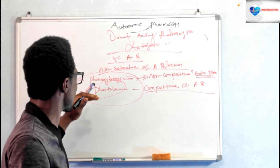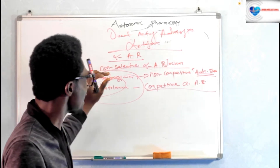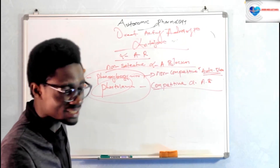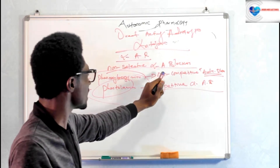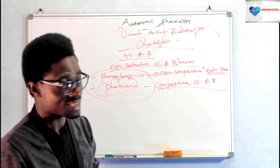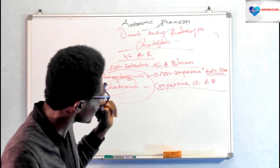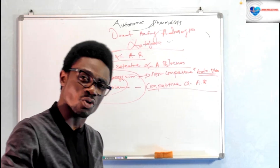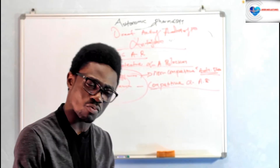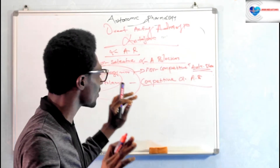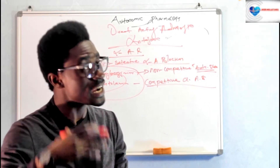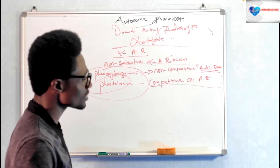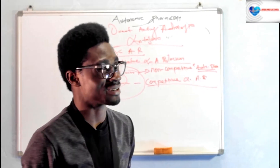So let's have a quick recap. We've discussed alpha adrenergic blockers, which are divided into selective and non-selective. The non-selective can be further divided into competitive and non-competitive non-selective alpha adrenergic blockers. For competitive non-selective, think of phentolamine; for non-competitive non-selective, think of phenoxybenzamine. Now what about the selective alpha adrenergic blockers?